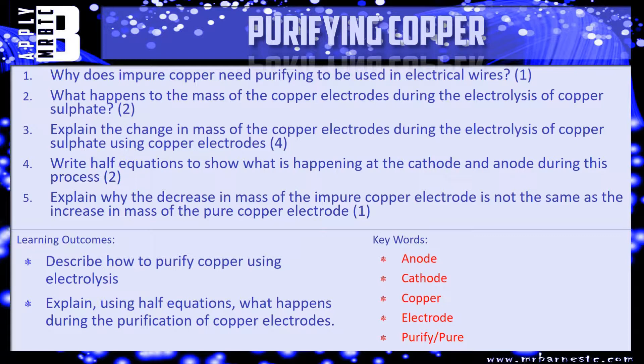Number four, write the half equations for both the cathode and the anode. Number five, explain why the decrease in mass of the impure copper electrode is not the same as the increase in mass from the pure one. What is it that forms, which is that difference in mass? Pause the video, have a go, we'll see how you've done shortly.